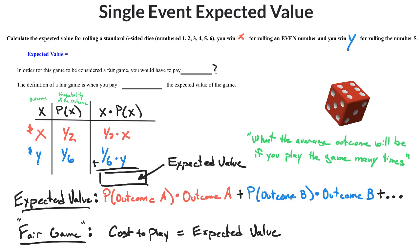In order for this game to be considered a fair game, you would have to pay what? Well, you'd have to pay whatever the expected value is. That is what makes something a fair game, because a fair game is always and only if the cost to play that game is exactly equal to the expected value.